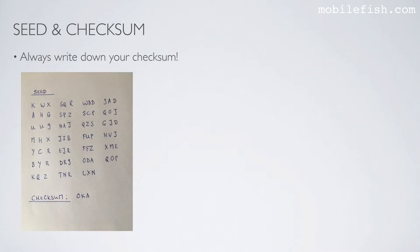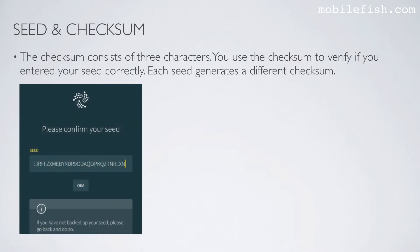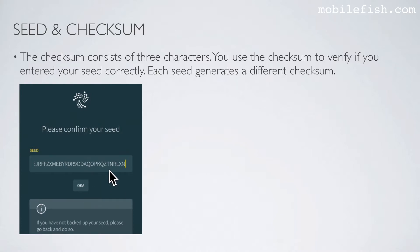As I mentioned in IOTA tutorial 26, always write down your checksum. The checksum consists of three characters and is used to verify if you entered your seed correctly. Each seed generates a different checksum. When you enter 81 characters in the seed box, you will see your checksum. In this particular situation, the checksum tells me that I have entered my seed correctly.